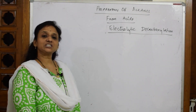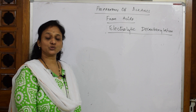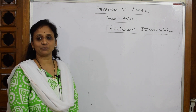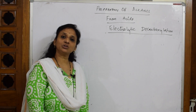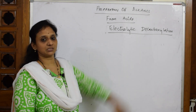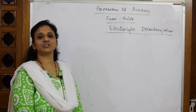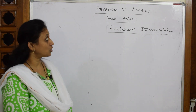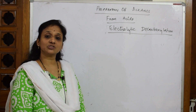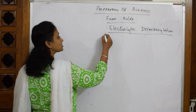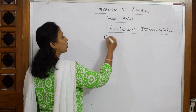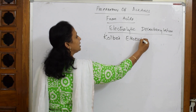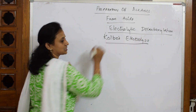We have already seen soda lime decarboxylation. Now we are going to see electrolytic decarboxylation — that means removing carbon dioxide in the gaseous state. The name given to this electrolytic decarboxylation is Kolbe's electrolytic method, or Kolbe's electrolysis.